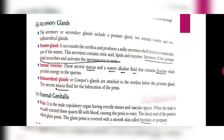Let us now discuss the accessory glands. There are three accessory glands in the human male reproductive system. The first is the prostate gland, which surrounds the urethra and produces a milky secretion that forms the major part of the semen. It contains citric acid, lipids and enzymes. The secretion of the prostate gland helps to nourish and activate the spermatozoa to swim in the female reproductive system.